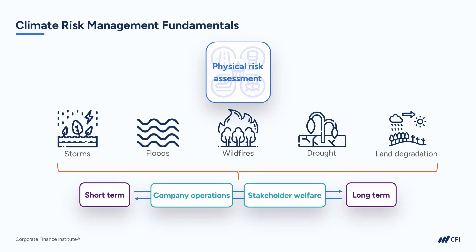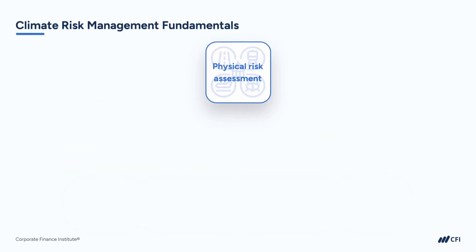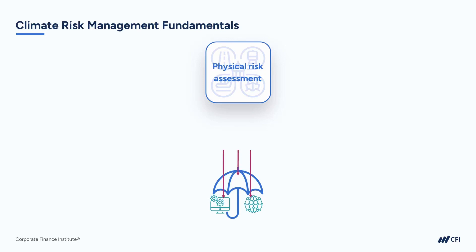For example, increasing storms and floods could impact a supplier's ability to get materials on time and at the same price point on a consistent basis. Even industries that are somewhat sheltered from physical climate risks, like information technology and software services, could suffer direct financial and other stakeholder impacts if a third-party data center were flooded or damaged, or if some other key digital infrastructure partner's assets became inoperable for a period of time.